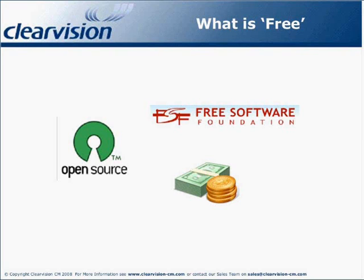Free software is often summed up by the phrase, 'free as in free speech, not free as in free beer.' Open source has been generalised as software for which source code is available. These are oversimplifications and there are many different license types, each with their own usage policies. The definition of open source software was written to be almost identical to the free software definition. There are very few cases of software that is free software but is not open source, and vice versa. The difference in the terms is where they place the emphasis. Free software is defined in terms of giving the user freedom, reflecting the goal of the free software movement. Open source highlights that the source code is viewable to all, and proponents usually emphasise the quality of the software and how this is caused by the development models popular among free and open source software projects. In most cases, the difference is more one of philosophy rather than actual physical restriction.